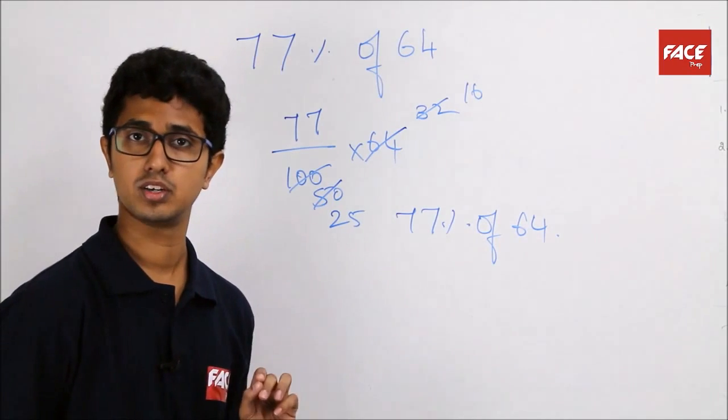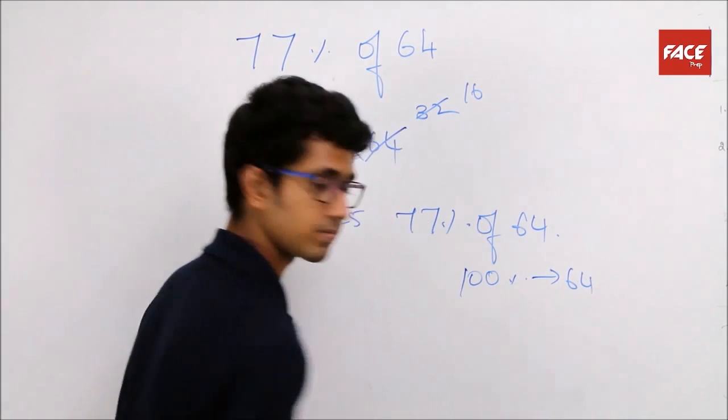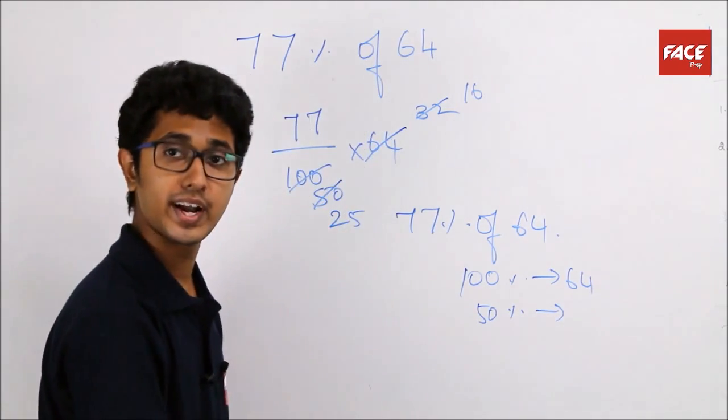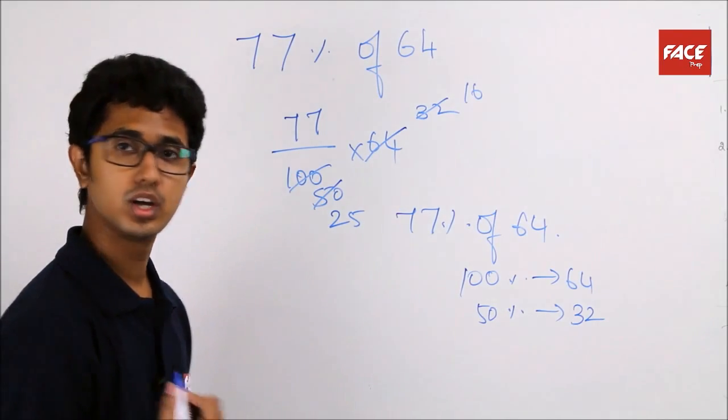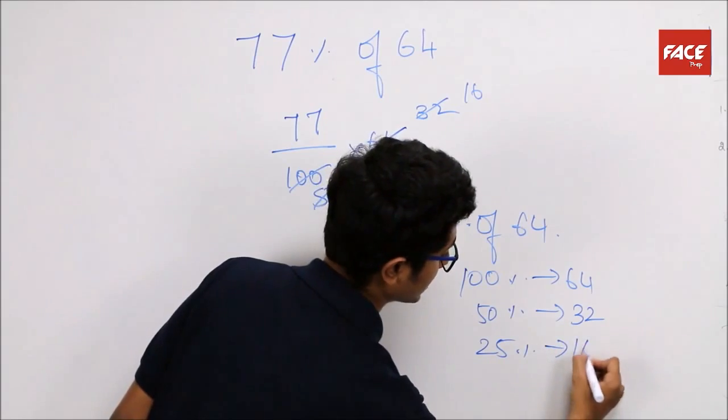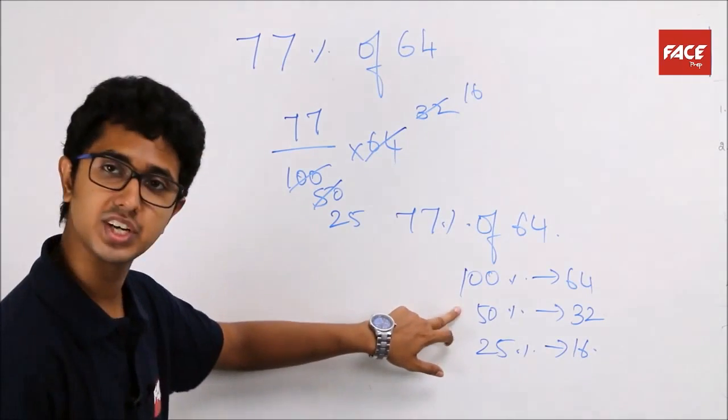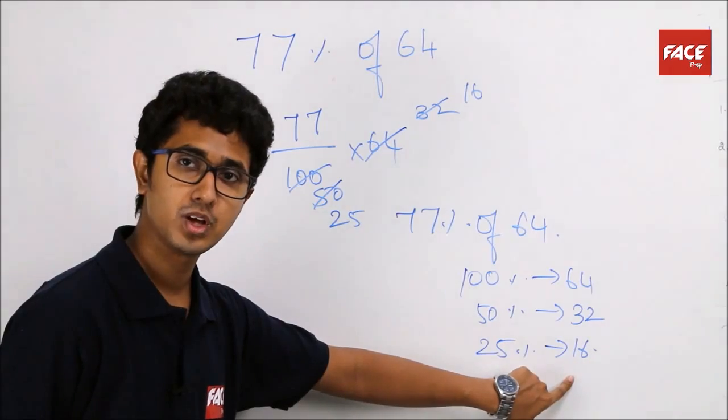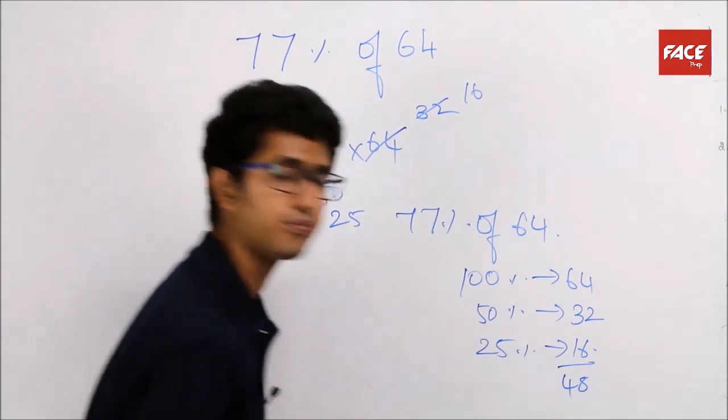Let's take it in this fashion: 77 percentage of 64. Now, 100 percentage of 64 is 64. Then, what is 50 percentage of 64? It is nothing but 32, half of 64. Now, what is 25 percentage of 64? It is half of 32, which will be 16. So, can I say 75 percentage of 64, as in 50 percentage plus 25 percentage, is equal to 32 plus 16? Yes, it is actually possible. This will be 48. So, 75 percentage of 64 is 48.